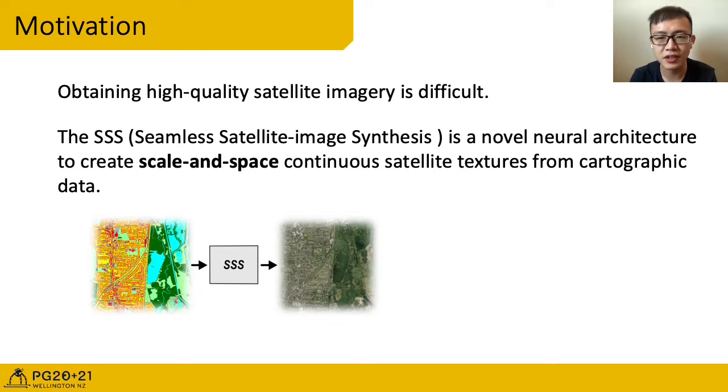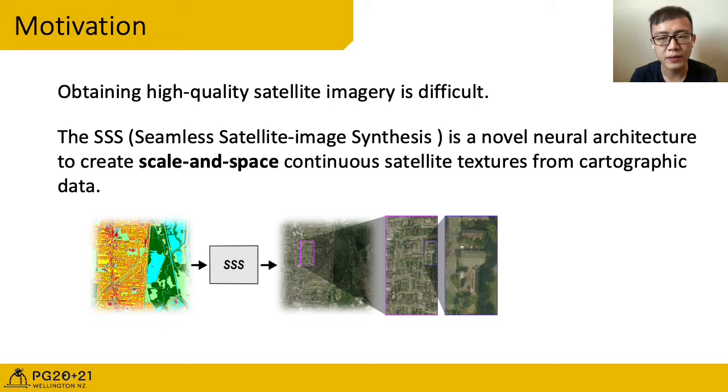To overcome tile size limitations in image-to-image translation approaches, SSS learns to remove seams between tiled images in a semantically meaningful manner. Scale space continuity is achieved by a hierarchy of networks conditioned on style and cartographic data. This figure shows the SSS pipeline. We use map data as input and our pipeline creates a seamless image of arbitrary resolution, which means that we can zoom in, zoom in again in a long way, and zoom in everywhere.